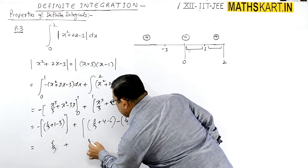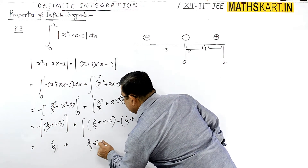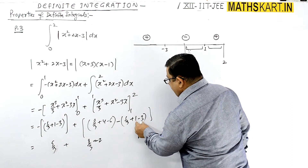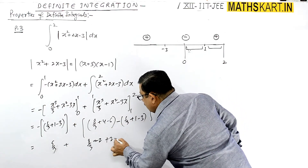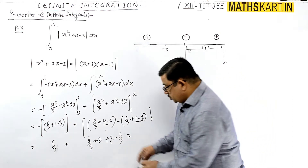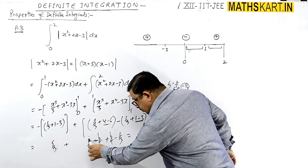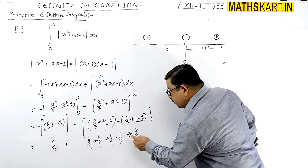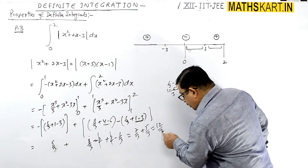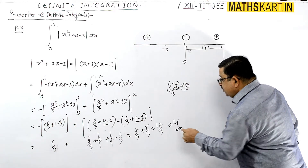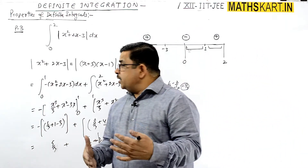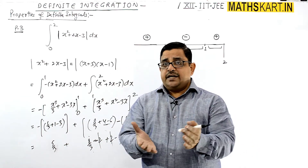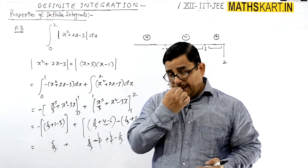Simplifying: -5/3 gives positive 5/3 from the first part. Then from the second part: this gives -2, and this is +2 and -1/3. So that gives 8/3 - 1/3 = 7/3, and plus 5/3 gives 12/3. So the answer becomes 4. That is how we solved this Property 3 example.